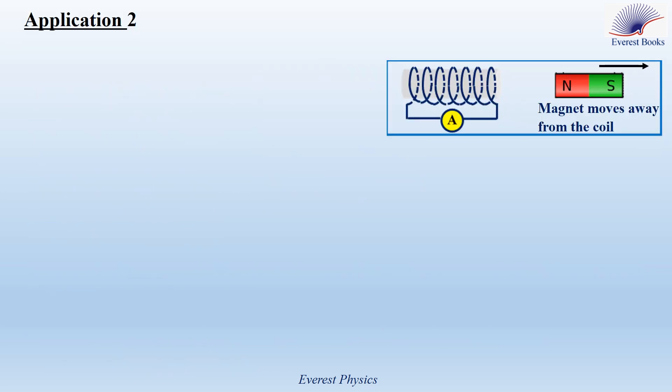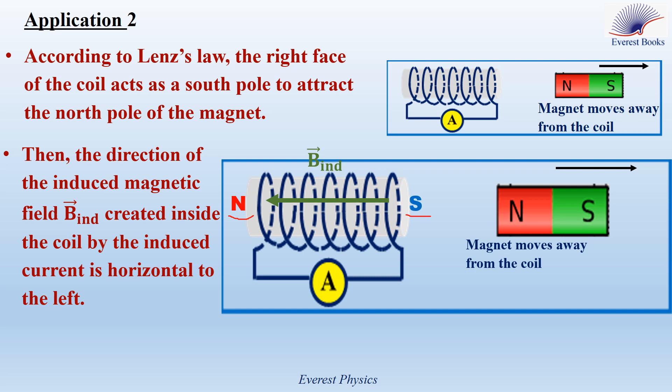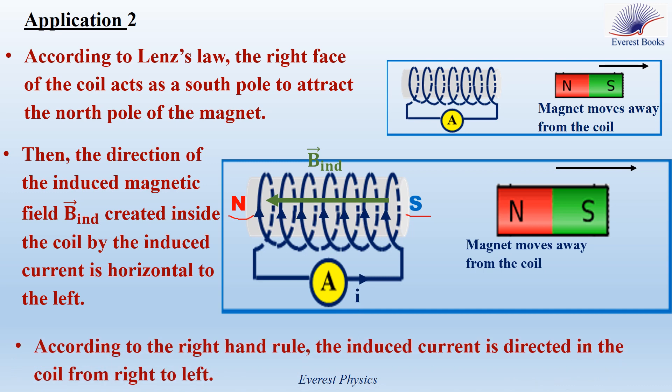Second example: the bar magnet is moving away from the coil — determine the direction of the induced current. In this case, the right face of the coil acts as a south pole to attract the north pole of the magnet, resisting its motion; the left face acts as a north pole. Therefore, the magnetic field inside the solenoid is directed horizontally to the left. Using the right-hand rule, curling the fingers in the shown direction of the current, the thumb points to the left. Therefore, the induced current in the coil is directed from right to left.